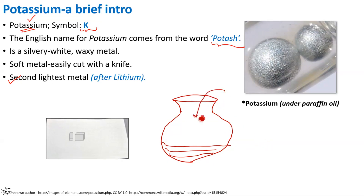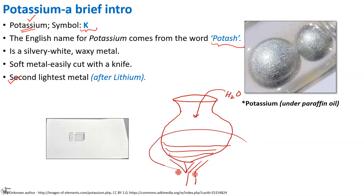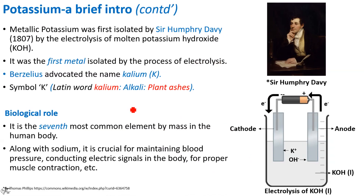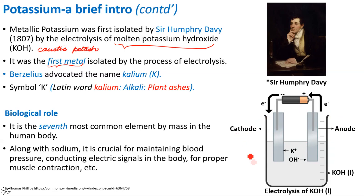Thereafter water is added into this and the resulting solution is evaporated by heating it. Since you have ash in the pot, you have the word potash. Moving ahead, potassium was the first metal isolated by the process of electrolysis of molten potassium hydroxide, also known as caustic potash. The process of electrolysis was carried out by Sir Humphrey Davy in the year 1807, and it was he who named it potassium.